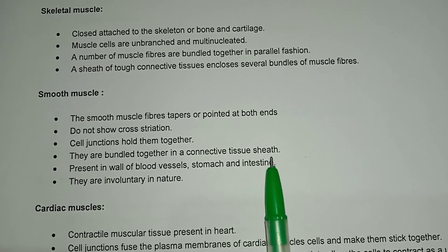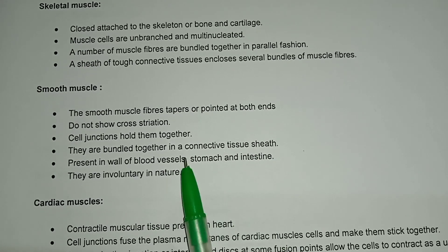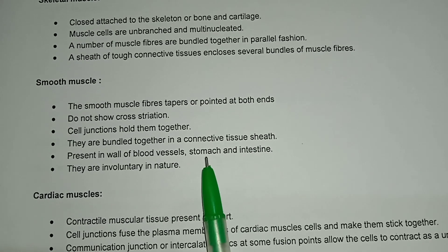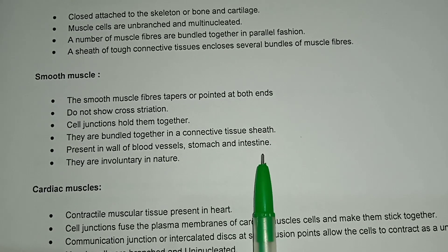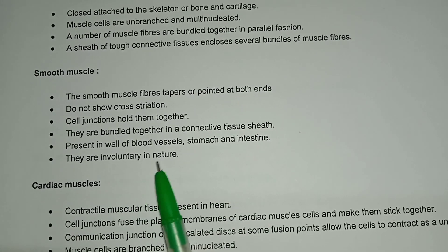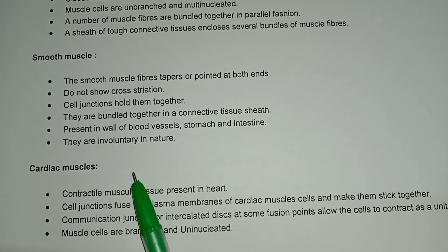Smooth muscle fibers taper to pointed ends at both ends and do not show cross-striation. Cell junctions hold them together. They are bundled together in a connective tissue sheet and are present in the walls of blood vessels, stomach, and intestine. They are involuntary in nature.